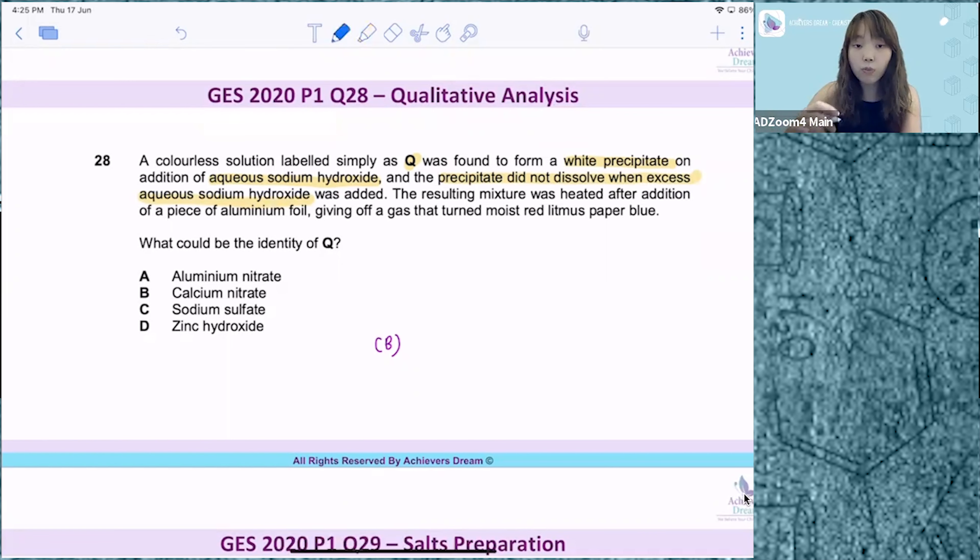Based on this first statement, whenever you see NaOH, this is a QA question. Whenever you see NaOH, you need to link it to the test for cations.